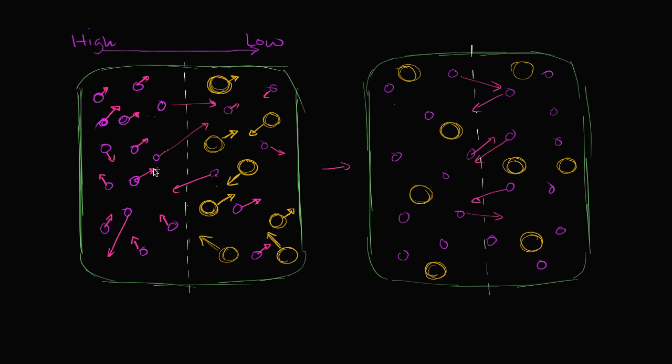They have moved down their concentration gradient to make things more uniform. Now, what's interesting about this diagram is I've introduced a second particle, these big yellow particles. And we see that their concentration gradient is going in the other direction.